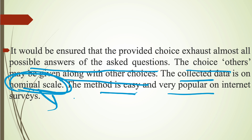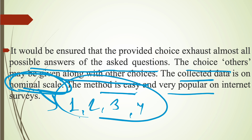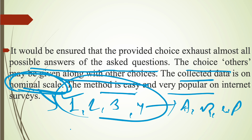What is nominal scale? As we already discussed, you can check the link from the description box. In nominal scale, for example, row numbers 1, 2, 3, 4 — there is no order and no division in this case. If we give only numbers to particular options, this comes under nominal scale. A, B, C, D — this is also a nominal scale. This method is very popular in internet surveys.